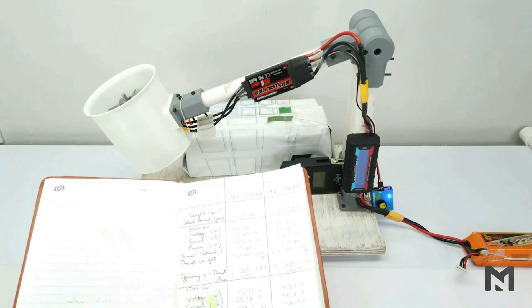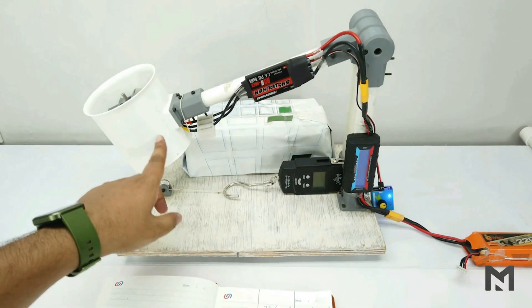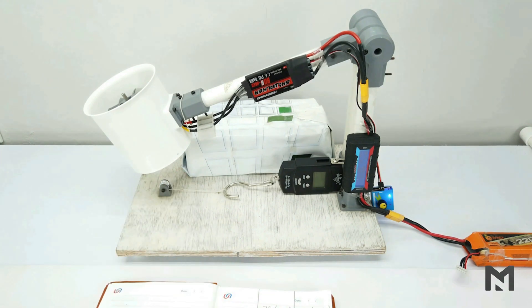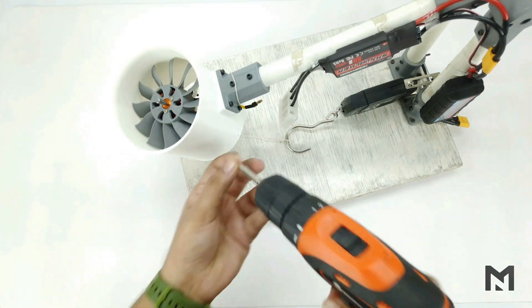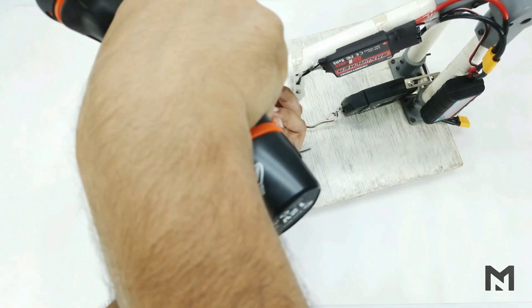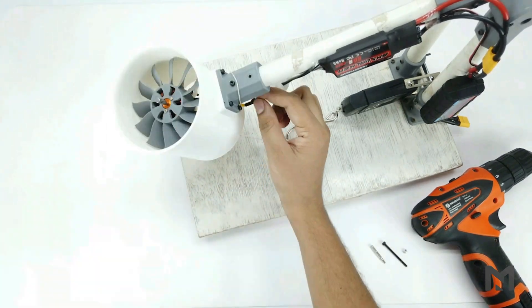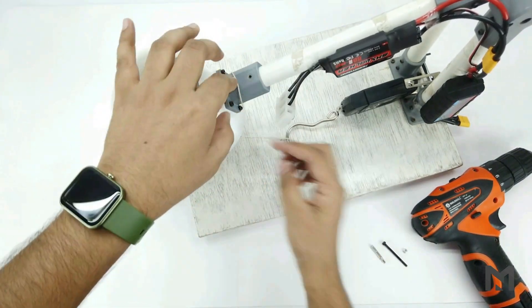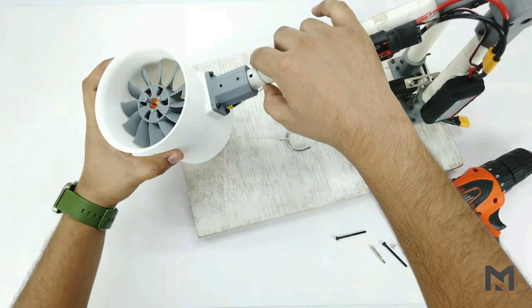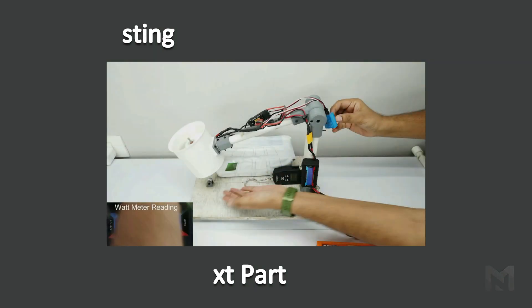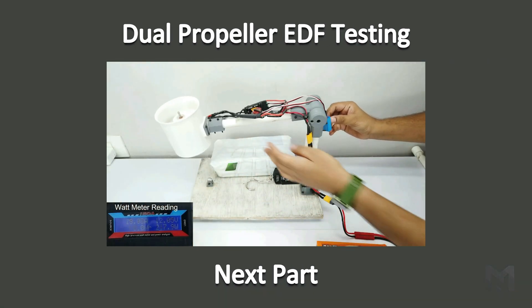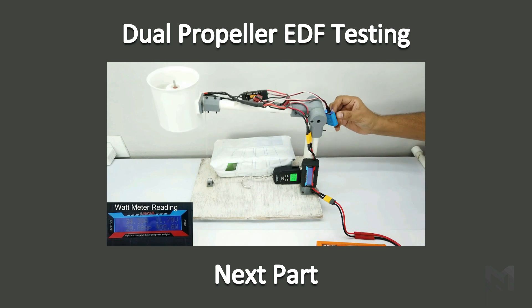Now I will check the thrust test using dual propellers. So now I will eliminate this 1000 KB motor and use two 1700 KB motor for dual propeller configuration. And the weight of single propeller EDF is about 193 grams. Now I will perform the thrust test of dual propeller configuration in the next part.